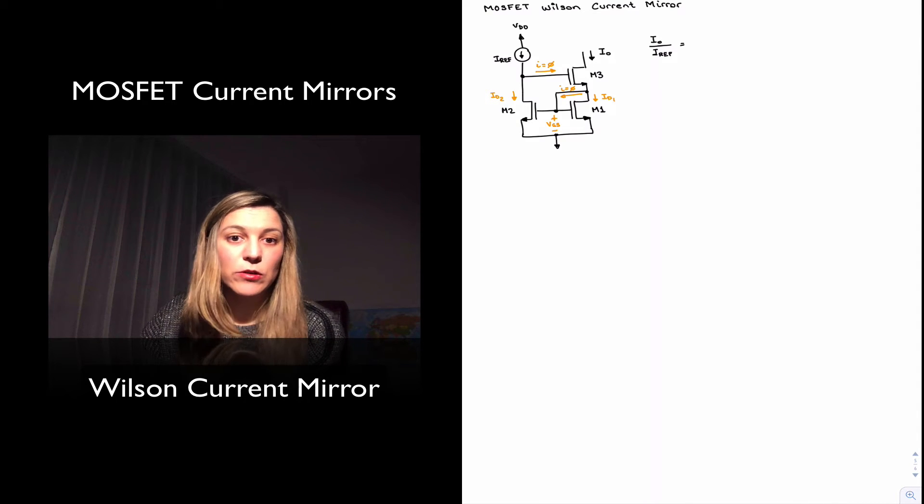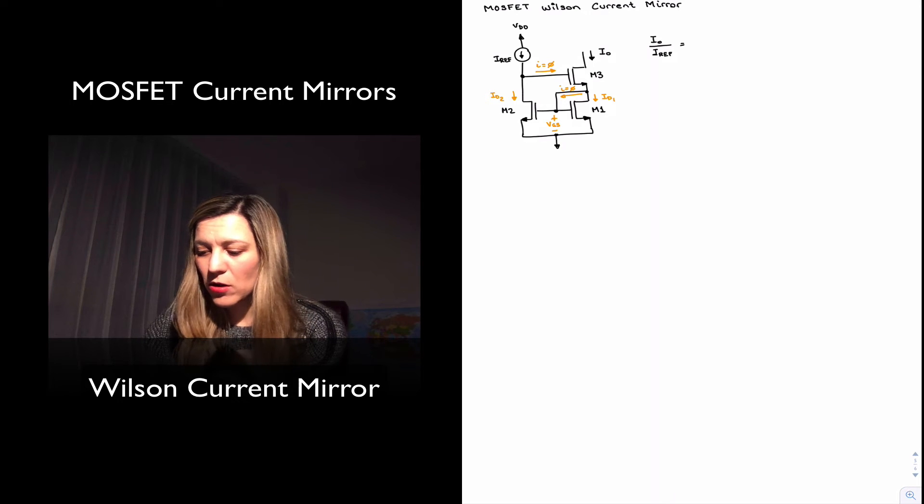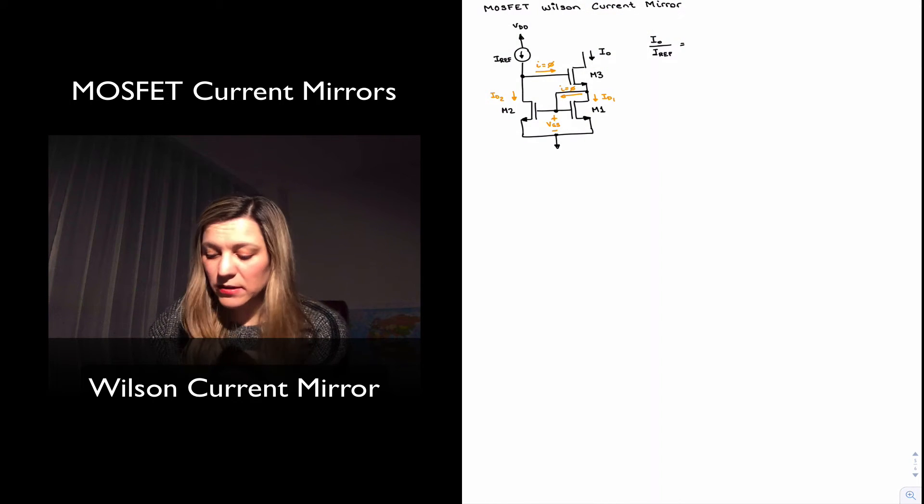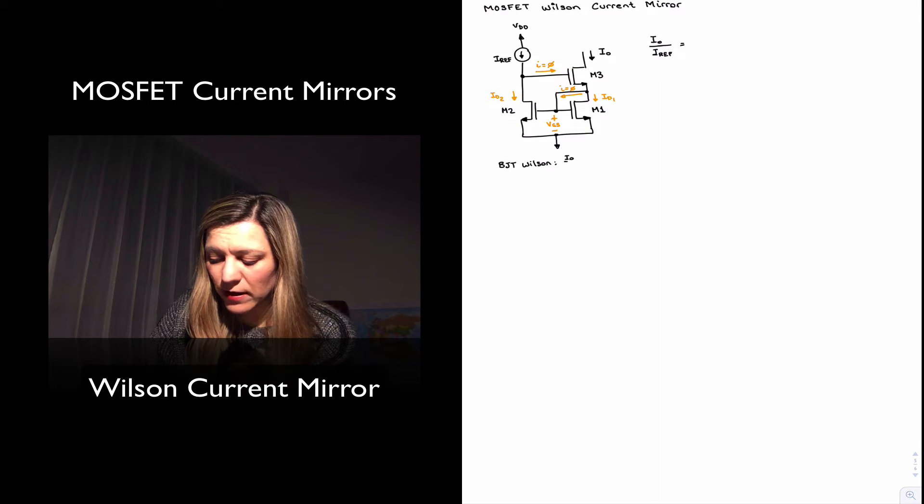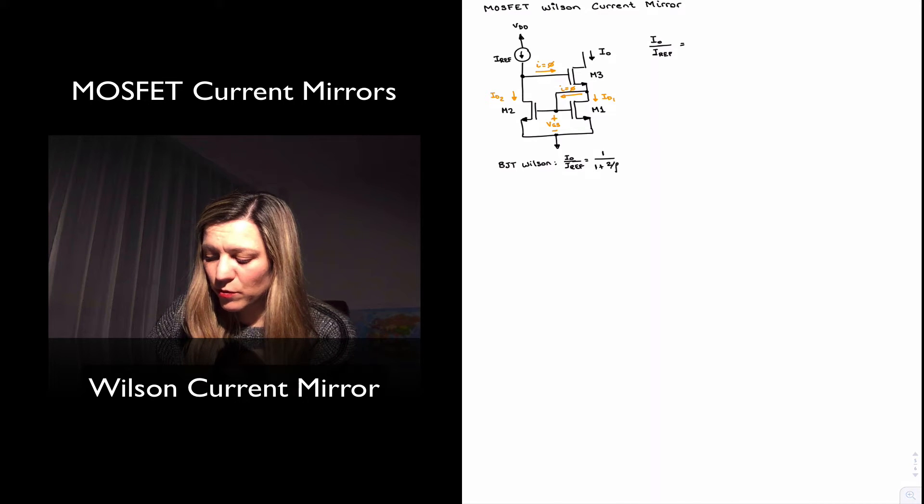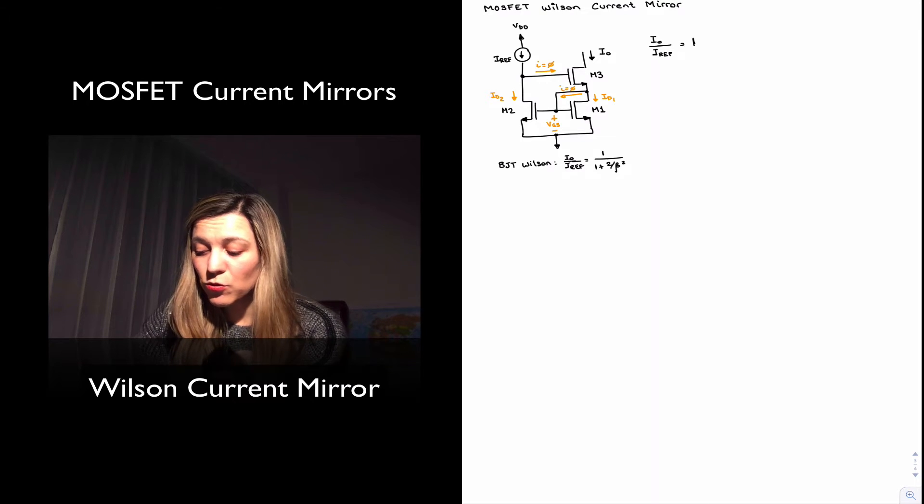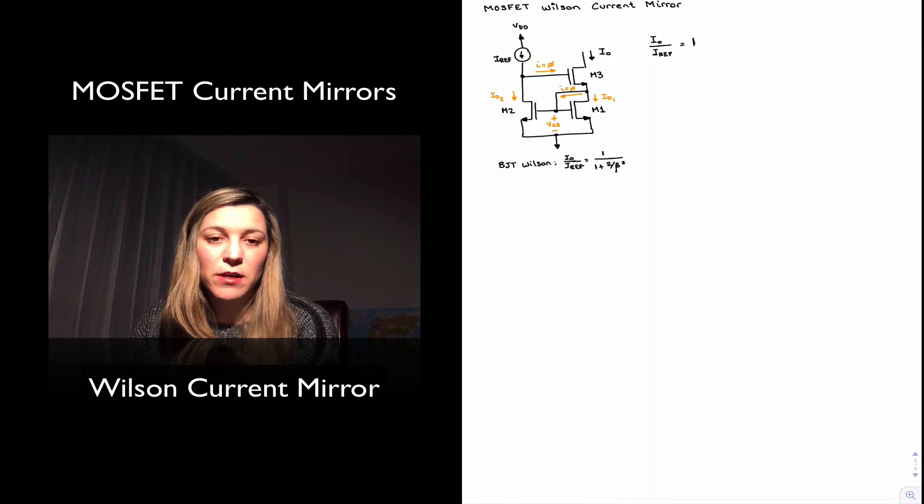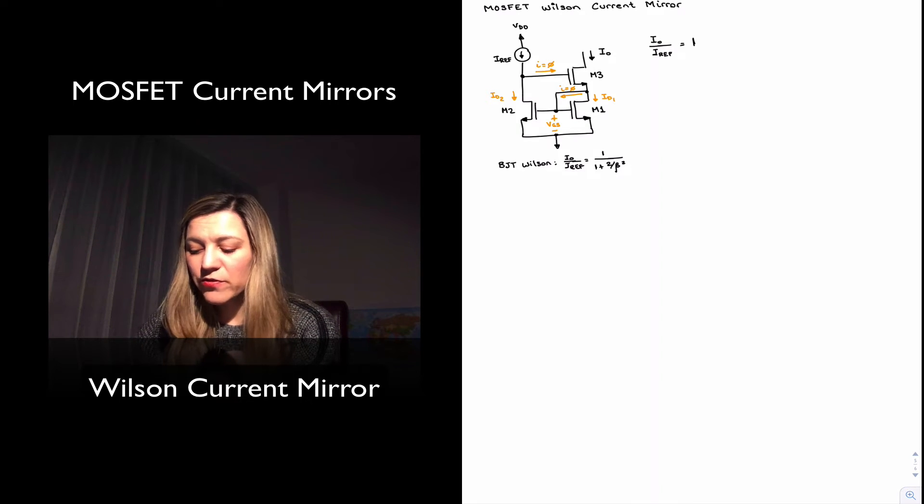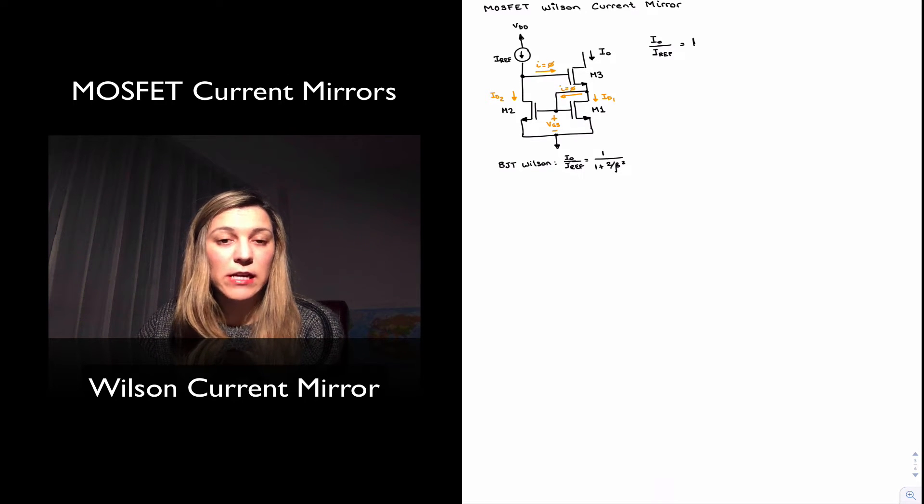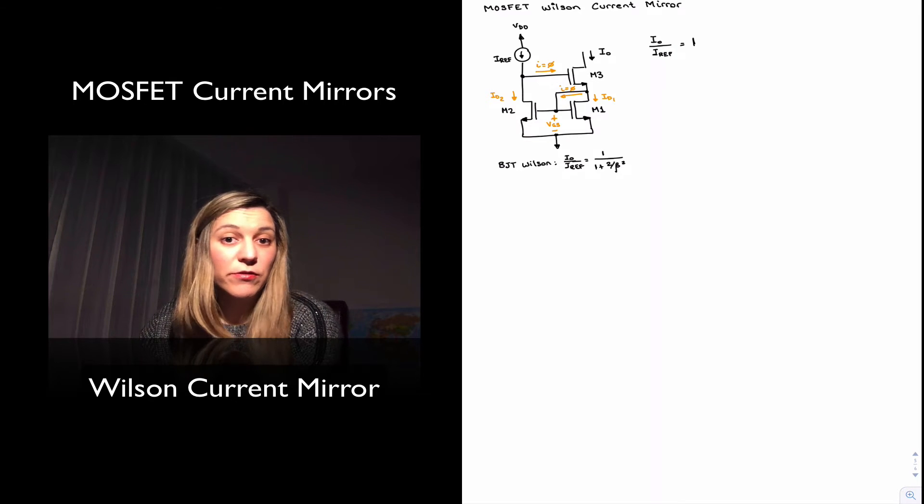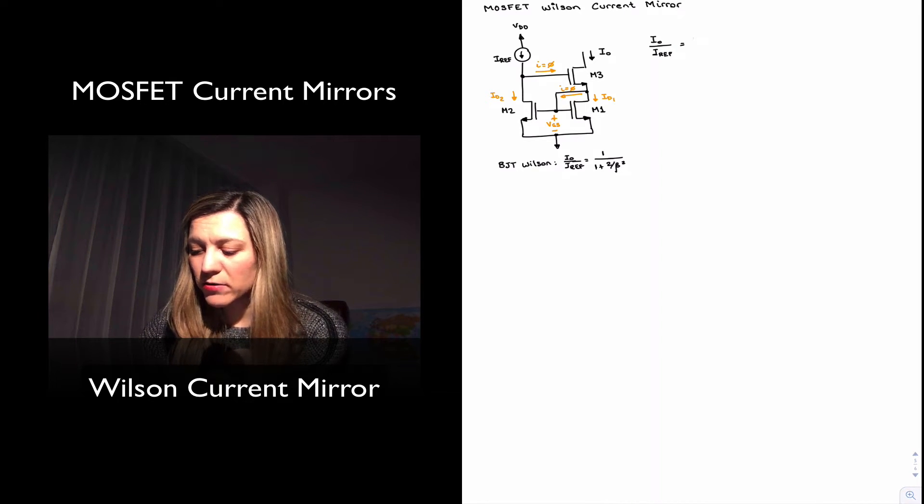And so all of IREF keeps flowing in the direction towards the drain of M2. And therefore, in the case of the BJT, if you remember, in the BJT-Wilson mirror, we had that IOUT over IREF was equal to one over one plus two over beta squared. But in this case, the ratio will be actually perfectly equal to one if we don't take into account a couple of factors. The first factor is that transistors can have different sizes. And in integrated circuit design, the aspect ratio of the transistors is actually a parameter that we play with to come up with currents that are multiples of a particular reference current.